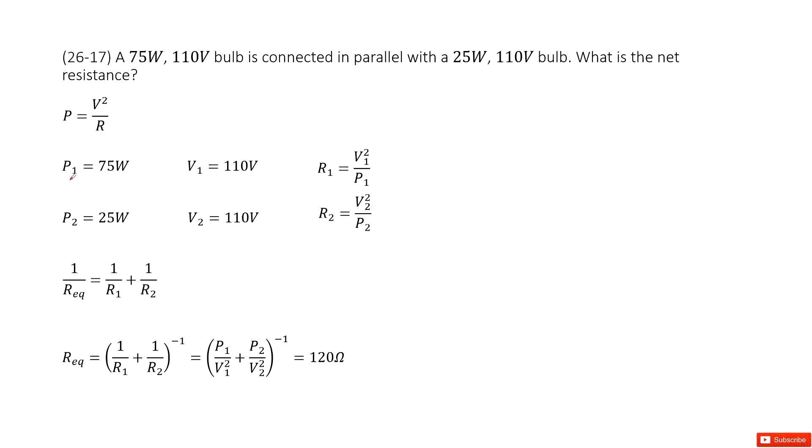There we have two light bulbs connected in parallel. First step, we can write the quantities for each light bulb: P1, V1, P2, V2.